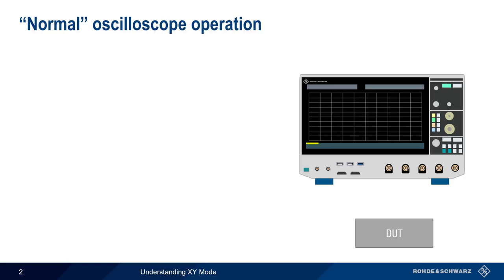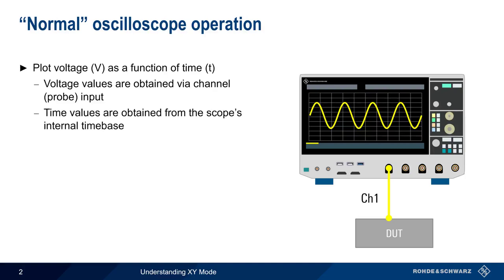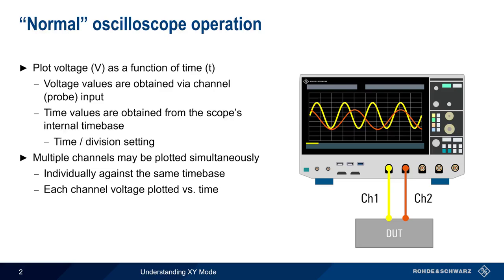In normal operation, an oscilloscope is most often used to plot voltage as a function of time. The voltage values are obtained via the scope's inputs or channels, often using a probe, and the time values are obtained from the scope's internal time base. This is controlled by the time per division, or horizontal setting. Most scopes have multiple channels or inputs that can be acquired and plotted simultaneously, but in normal operation these channels are all plotted individually against the same time base — each channel is plotted as a function of time.